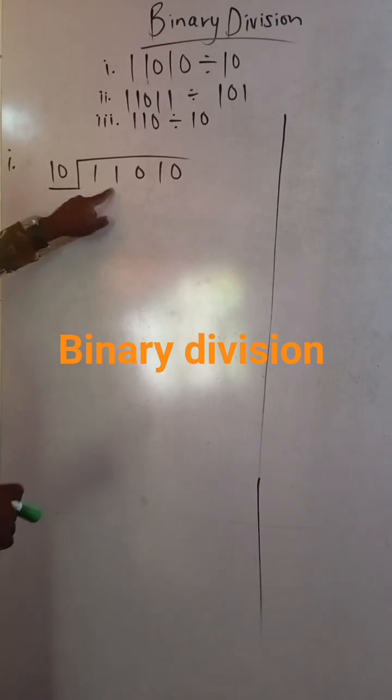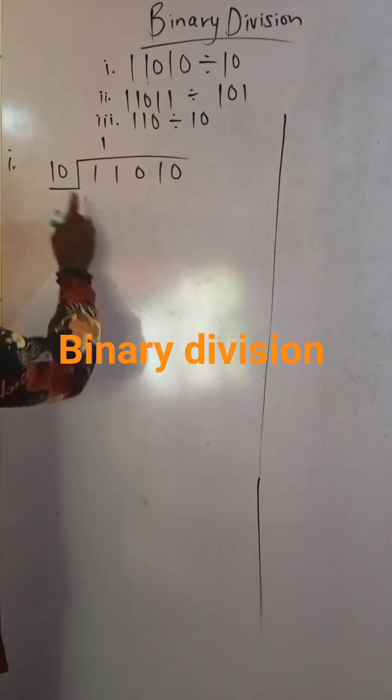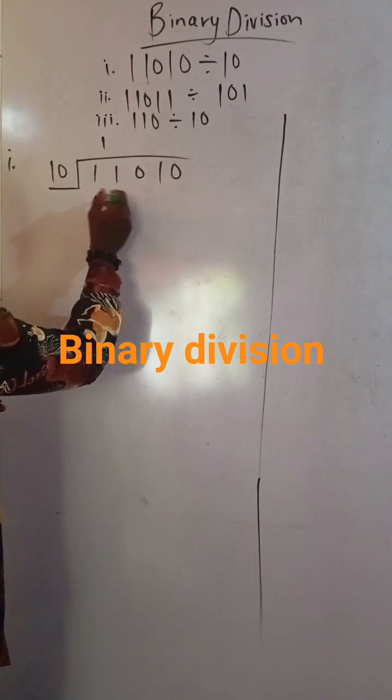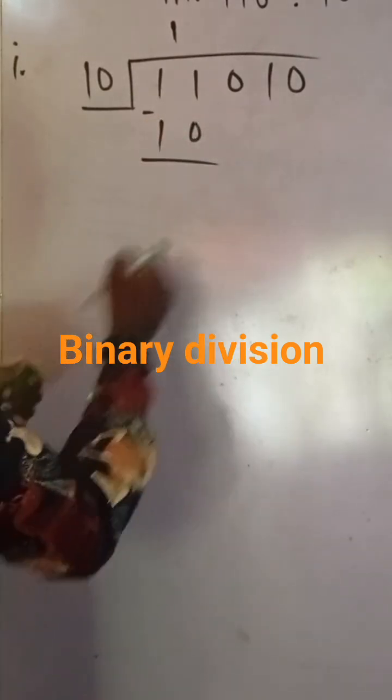So 10 into 11 is going to be 1. 1 times 10 is 10. You do subtraction. Now we have 1 minus 0 is still 1, and 1 minus 1 is 0. There is no need to write down this 0.